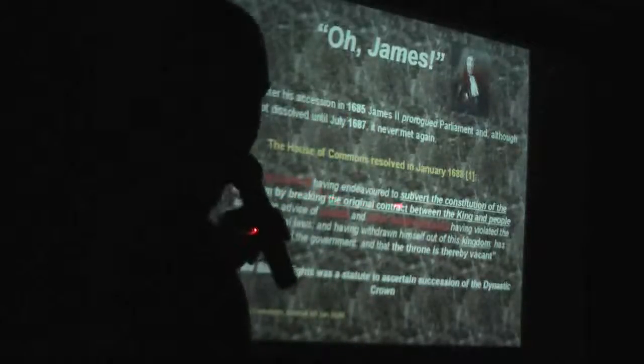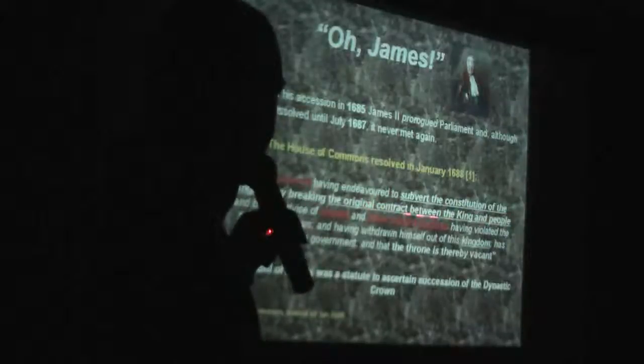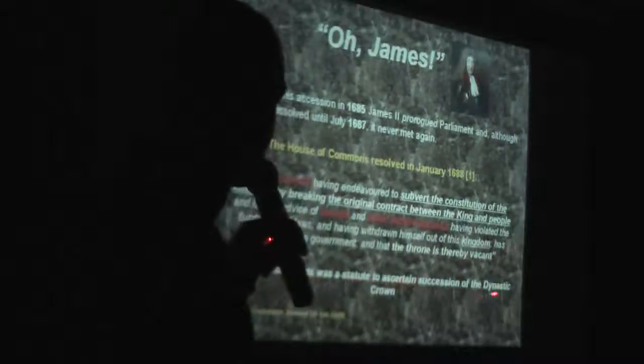It says, quote: 'King James II, having endeavoured to subvert the constitution of the kingdom — which then was common law — by bringing the original contract between the king and the people, and by the advice of Jesuits and other wicked corporations, having violated the fundamental laws and having withdrawn himself out of this kingdom, has abdicated the government and the throne is thereby vacant.' All this Bill did was ascertain succession of the Scottish and Germanic Protestant crown.